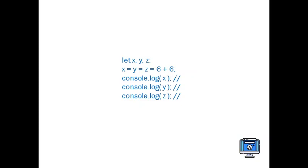It will try to evaluate from right to left. First, the rightmost expression is 6 plus 6, so it will be evaluated and assigned to z, and to y, and to x. So the output of this snippet will be: console.log will be 12, console.log will be 12, and console.log will be 12.